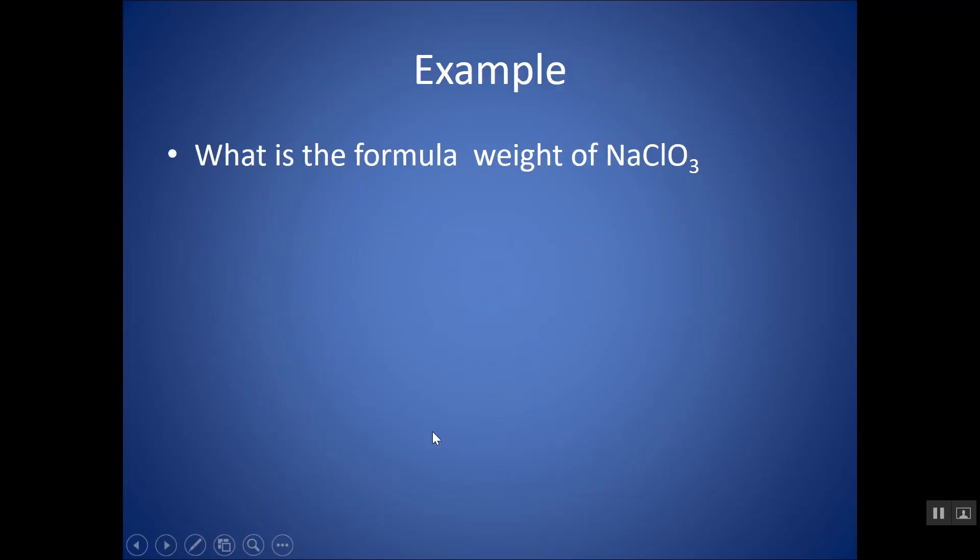So how do you do this? They would give you a formula, something like NaClO3, sodium chlorate. All you would do is take out your periodic table and just look up each element that you find. The first element here is sodium.